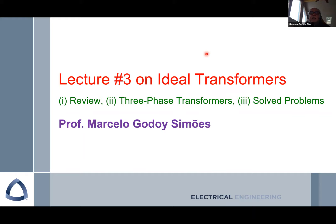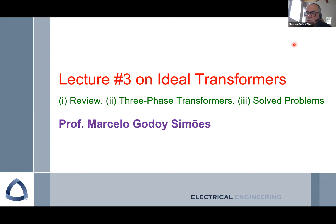Today we have our lecture number three on ideal transformers. Ideal transformers are a way to model transformers in a more simple way using equivalent models. We do not consider the actual construction — the primary and secondary windings made of copper that have losses, the magnetic iron core that also has losses. So in an ideal transformer, we do not have core losses, copper losses, or any leakage or capacitive effects.